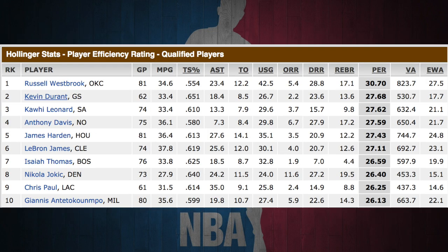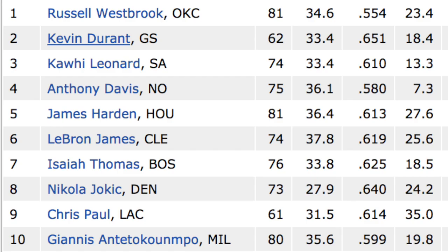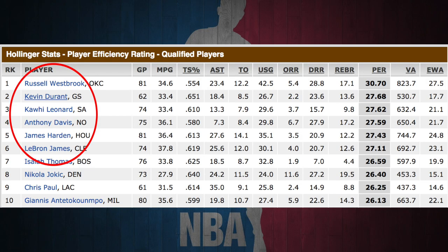Since 2017 is fresh on our minds, these were the top players according to PER last season. And at first glance, it's not too far off. The top 4 MVP candidates are all in the top 6, and although most people would not consider Nikola Jokic, CP3, or even Isaiah top 10 players last season, they did have really good seasons and deserve to be at least considered. But here are some of the major problems with the PER stat.